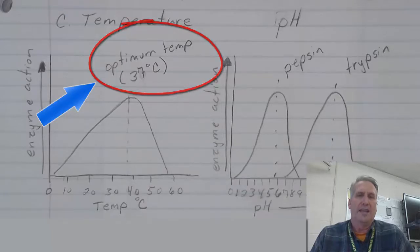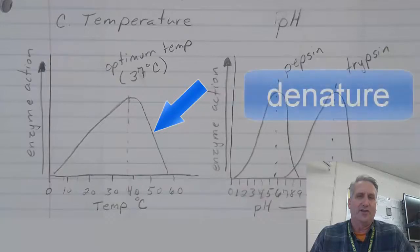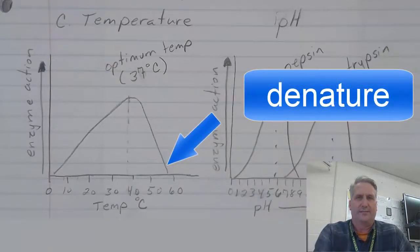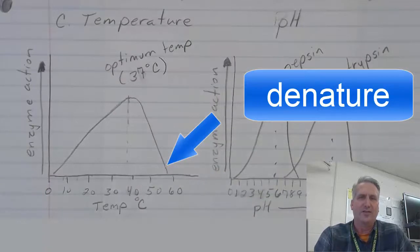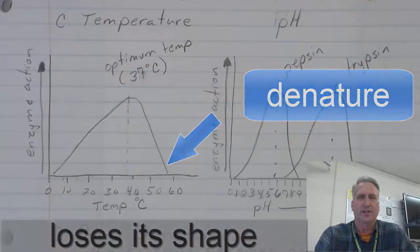When the temperature goes above the optimum temperature, the enzyme can begin to denature, which causes the reaction rate to decrease. When an enzyme denatures, it loses its shape and is no longer able to do its function.